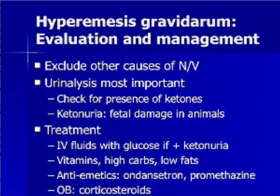The evaluation of HG should involve excluding other causes of nausea and vomiting, specifically urinary tract infection and intra-abdominal emergencies. Ketonuria without cells is the typical finding seen on urinalysis with HG. Although there is no proven adverse effect of HG on the human fetus, animal data shows that ketonuria does cause fetal damage. The goal of therapy in HG is to provide dextrose-containing IV fluids so that the ketone bodies formed from decreased oral intake and fatty acid oxidation can be eliminated. Adjunctive therapies include vitamin supplementation and a high-carbohydrate, low-fat diet. Antiemetics are helpful in reducing nausea and allowing patients to adequately hydrate orally.